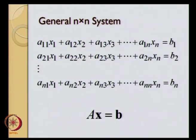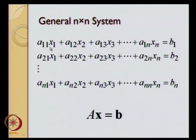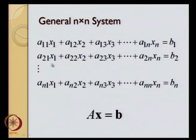This is the way we will write a general n-by-n system of equations, where x1, x2, x3, and xn are n variables. a11, a12, and so on are the n coefficients for the first equation; a21 up to a2n are n coefficients of the second equation, and so on up to an1, an2 up to ann, which are the n coefficients of the nth equation.